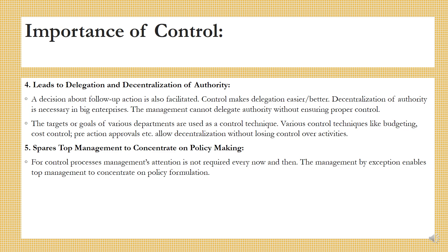Control leads to delegation and decentralization of authority — when control happens at every level, some amount of authority has to be given to people to control at all levels, which means decentralizing. Control makes delegation easier and better. Decentralization of authority is necessary in big enterprises — management cannot delegate authority without ensuring proper control. Various control techniques like budgeting, cost control, pre-action approvals etc. allow decentralization without losing control over activities.